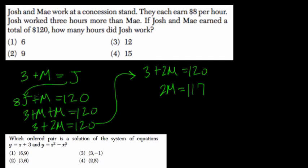It's 8J plus 8M because they each earn $8 per hour. It's not that J plus M would be their hours added to 120, but they didn't work 120 hours. The money they made was 120. So it's 8J plus 8M.